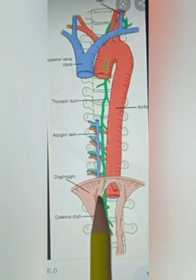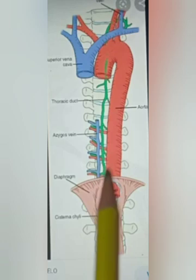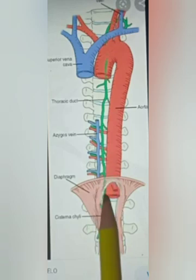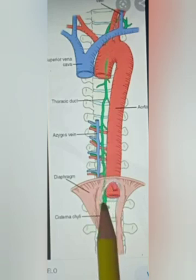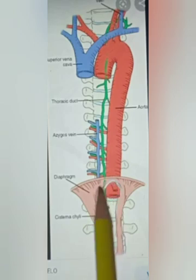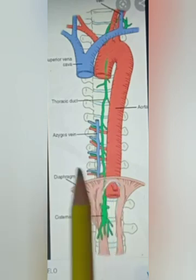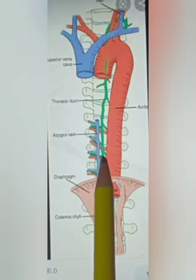The upper end of the cisterna chyli is continuous with the thoracic duct. It continues upward and runs from the aortic opening of the diaphragm, ascending and continuing as the thoracic duct.